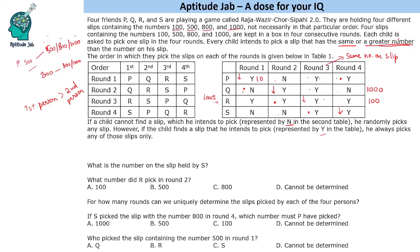In round 3, everyone picks the same number as on their slip. So Q will pick 1000 in round 3 because Q gets Y. Now let's analyze round 2, which is interesting, because we already know the outcomes for Q and R.